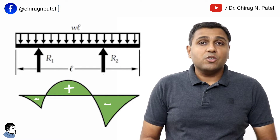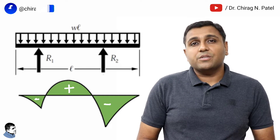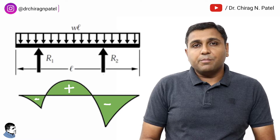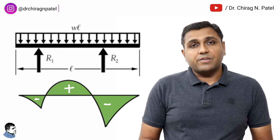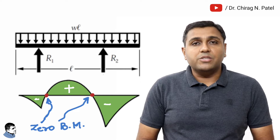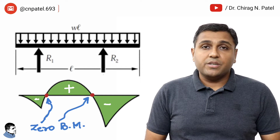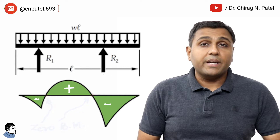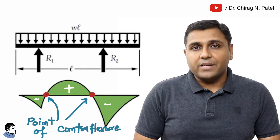The bending moments of the opposite nature always produce curvatures of the beam in opposite directions. In a beam, if the bending moment changes sign at a point, that point itself has zero bending moment. The beam changes curvature at this point of zero bending moment, and this point is called the point of contra flexure.